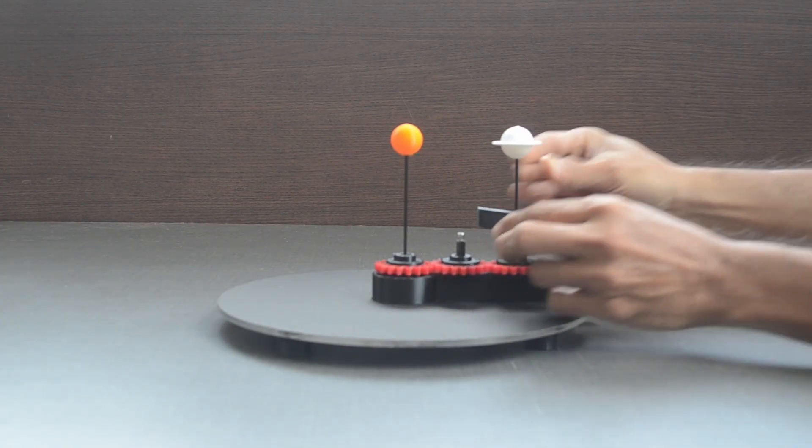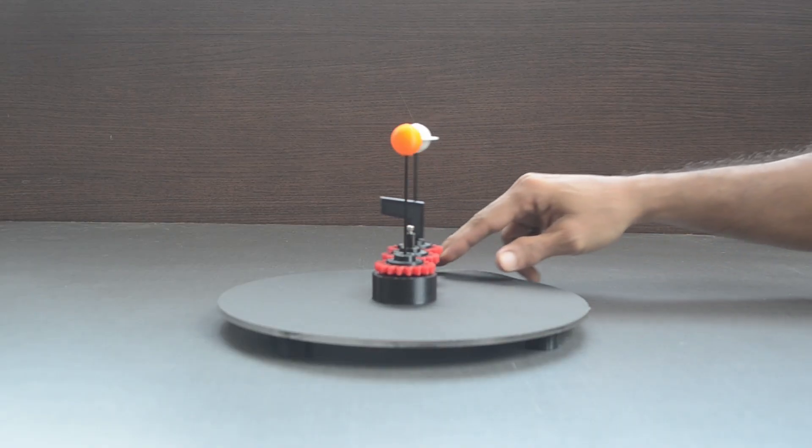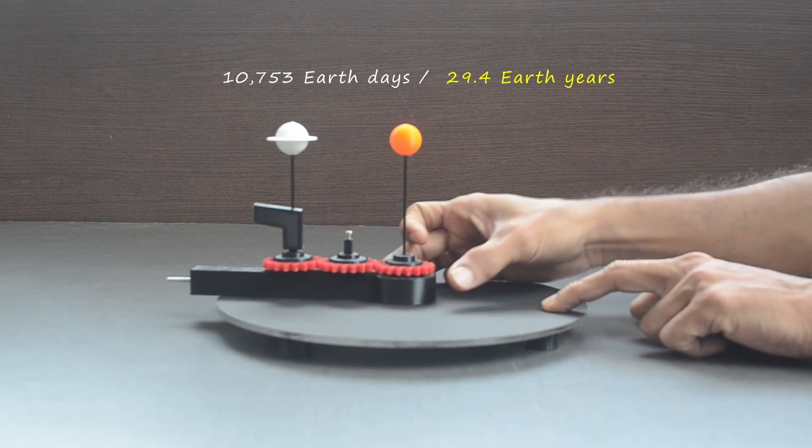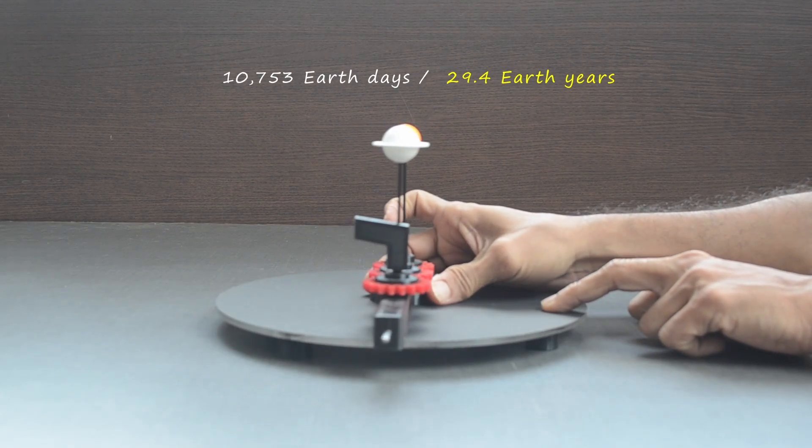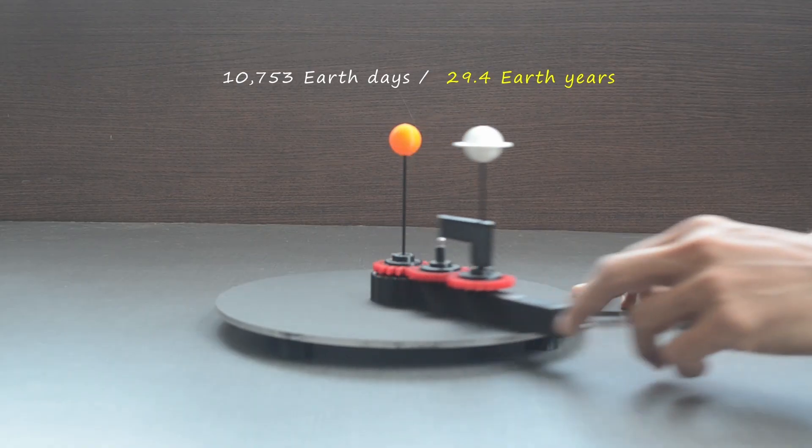Saturn in turn takes a longer time, that is 10,753 earth days or approximately 29.4 years to complete one revolution around the sun.